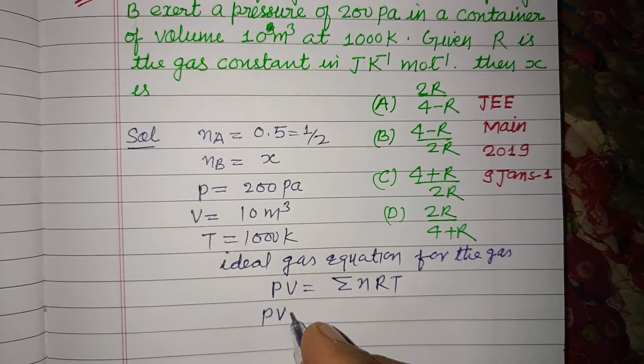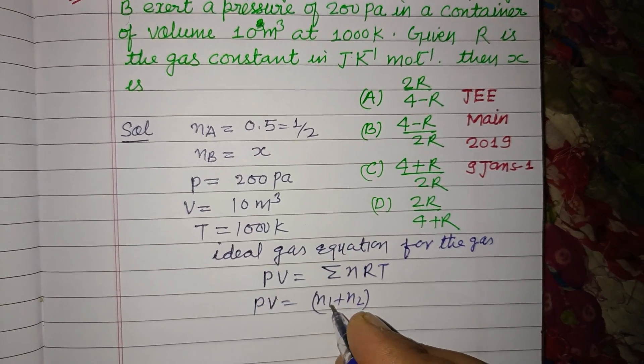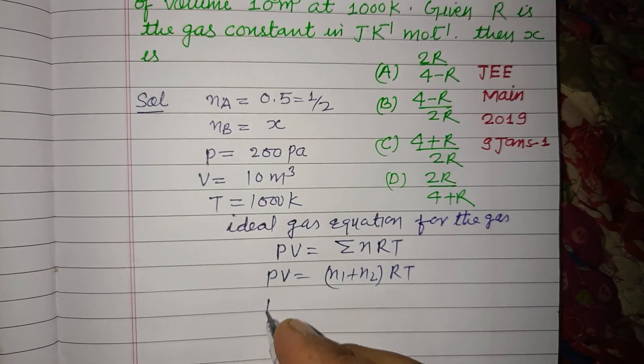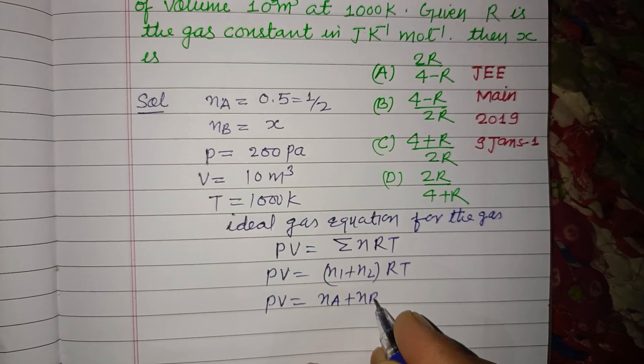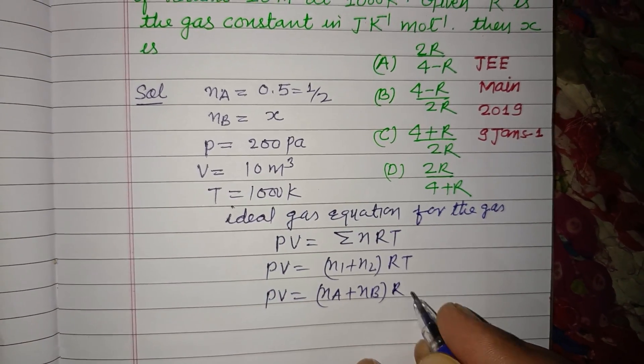so PV equals n1 plus n2, these are the moles of the gases, so PV equals nA plus nB. We have two gases, A and B, times RT.